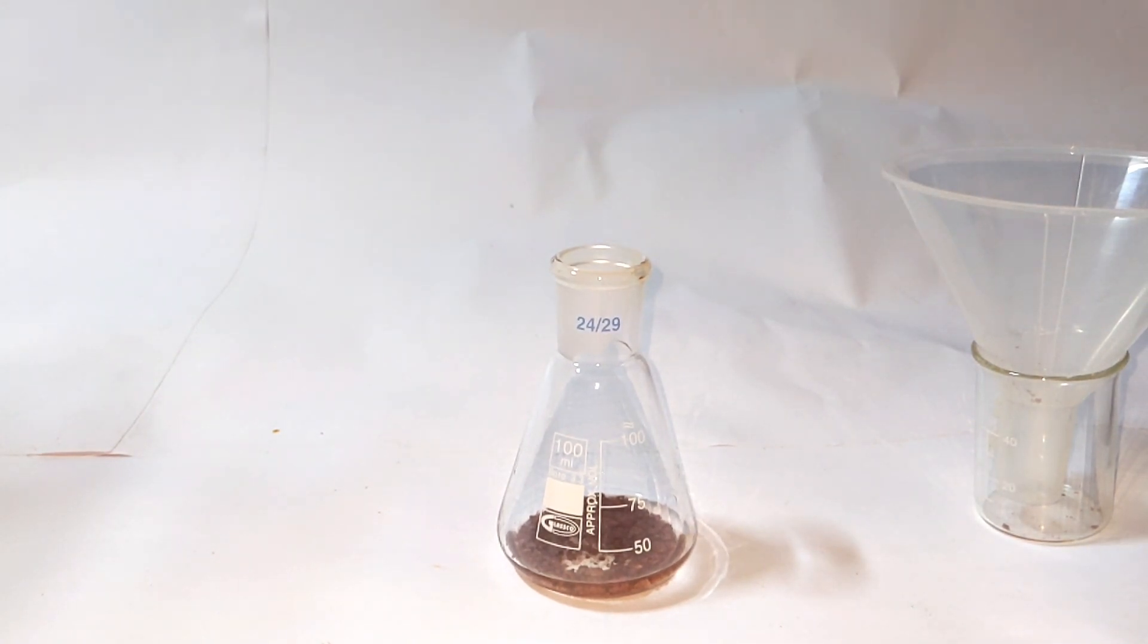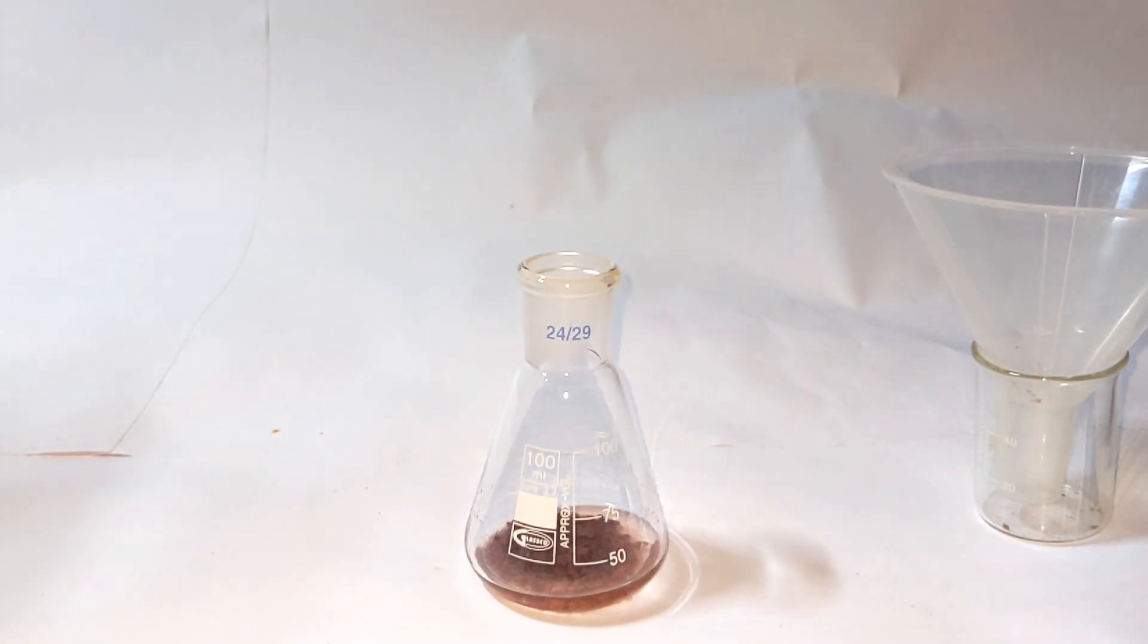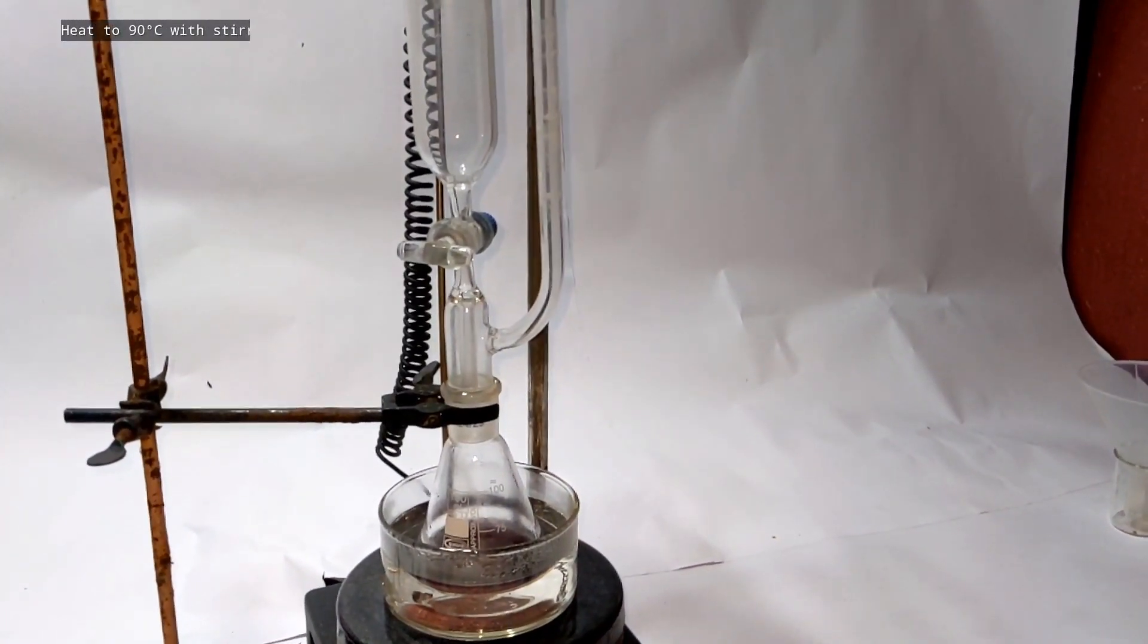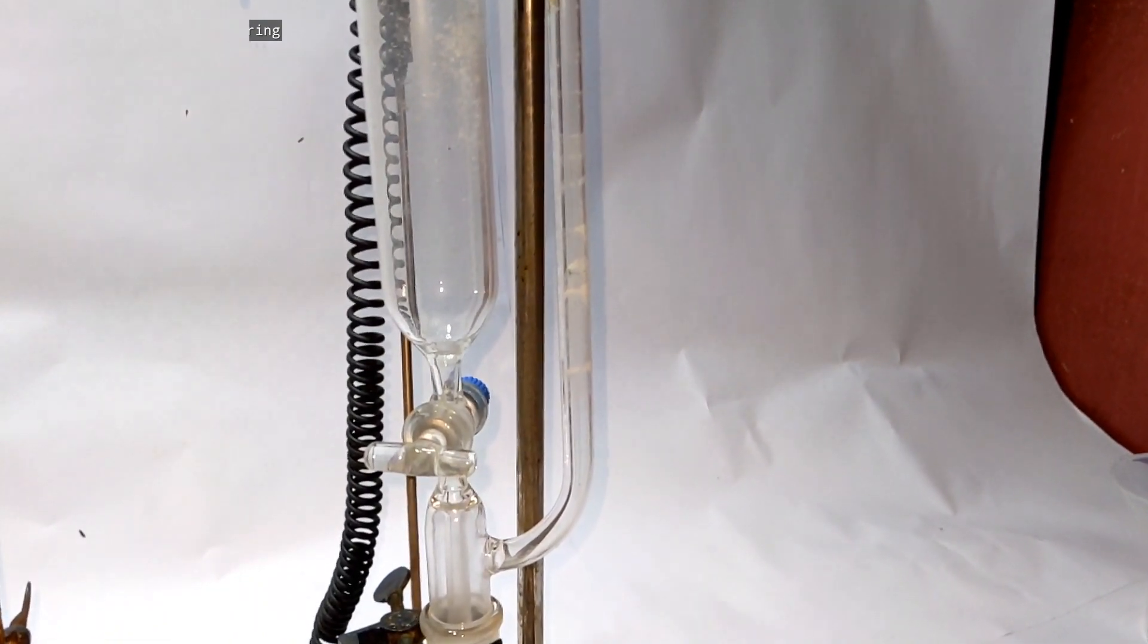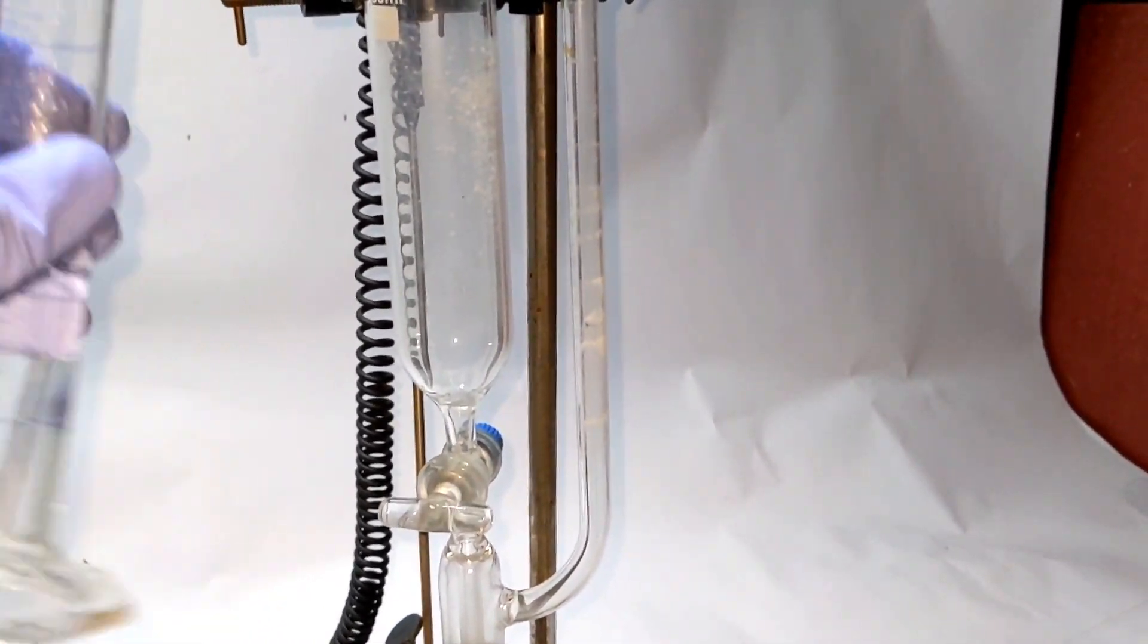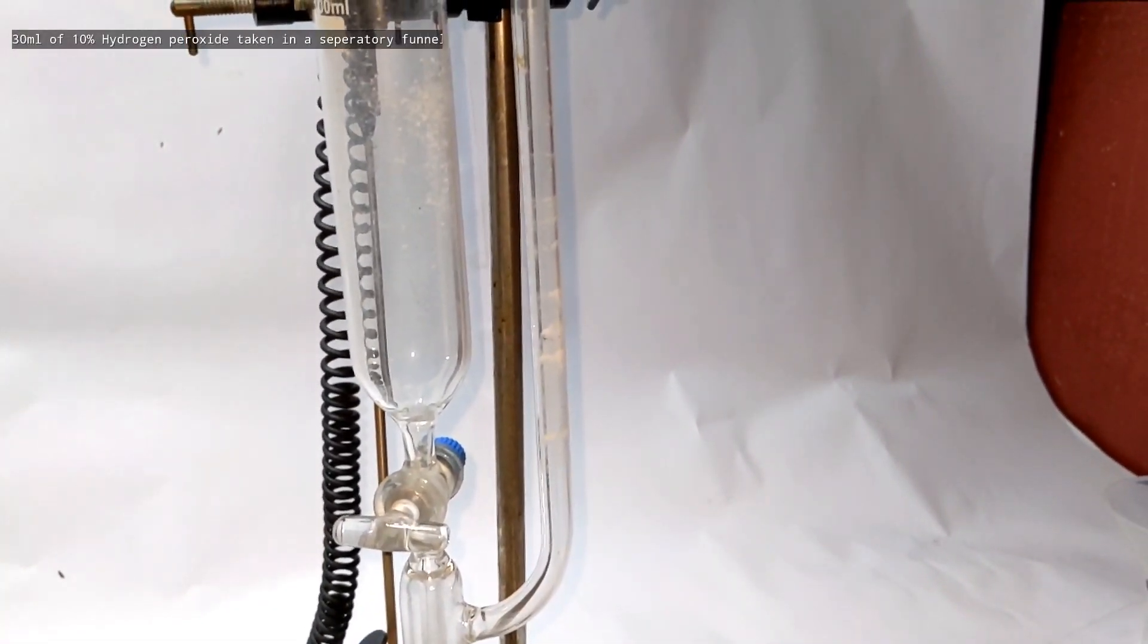The mixture was shaken well and it was placed in a setup like this. A pressure equalizing funnel was connected on top of the flask and the flask was placed in a water bath which was heated to 90 degrees celsius with stirring.